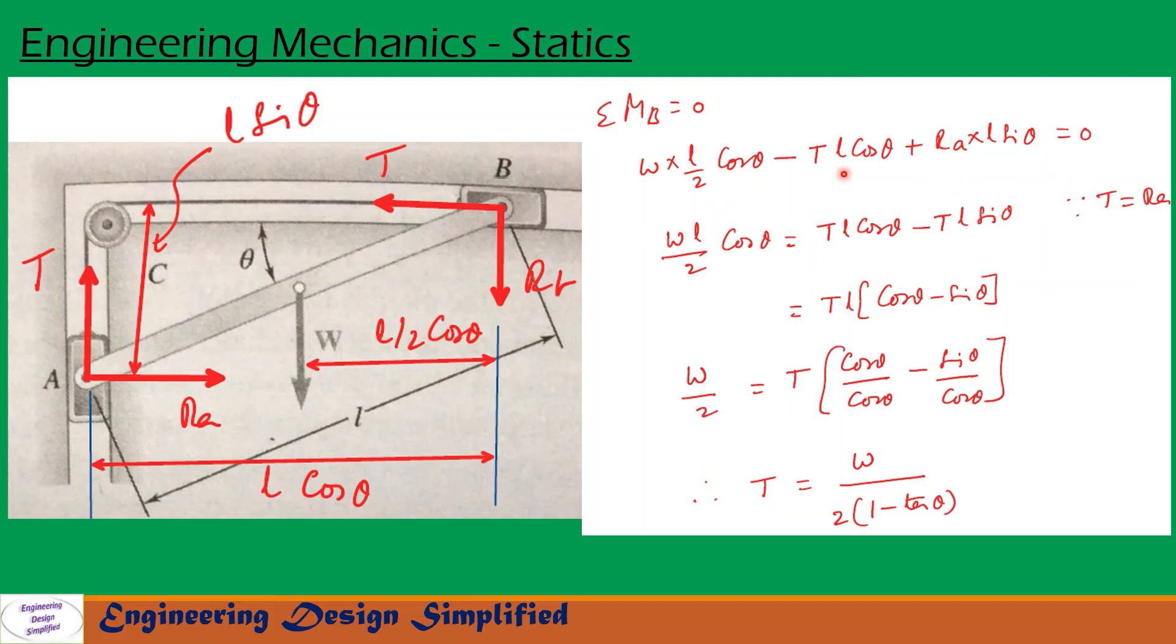After simplifying this equation and writing T = RA, which we have seen in the previous slide, we get W/2 = T × (cos theta)/(cos theta) - (sin theta)/(cos theta). With further simplification, we get T = W/2 × 1/(1 - tan theta). This is the equation for equilibrium in terms of T, W, and theta.